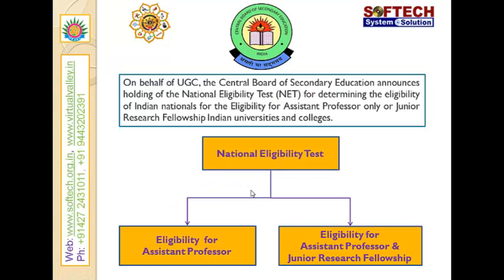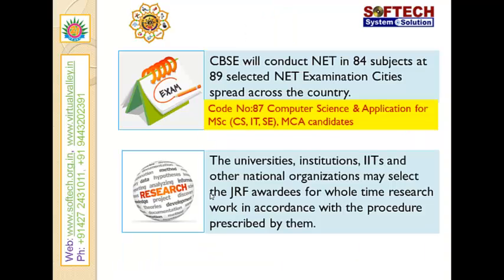From 2015, UGC NET examinations are being conducted by the Central Board of Secondary Education. NET is conducted to determine the eligibility for assistant professor and junior research fellowship. CBSE conducts this exam in 84 subjects at 89 cities across India. In Tamil Nadu, it is conducted in major cities like Chennai, Coimbatore, Madurai, and Trichy. Each subject has a separate code number and the code number for Computer Science and Applications is 87.